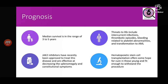Prognosis of primary myelofibrosis: median survival is very poor — three to five years. JAK2 inhibitors have recently been approved to treat this disease. Threats to life include intercurrent infections, thrombotic episodes, bleeding tendencies, and transformation to AML. Hematopoietic stem cell transplantation offers hope in young and fit patients.